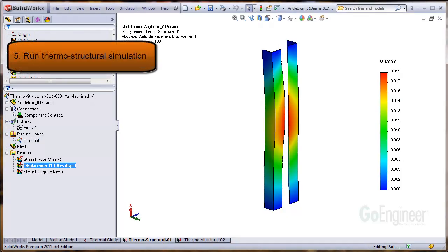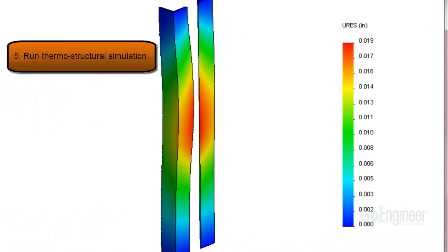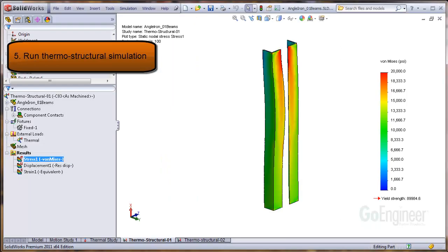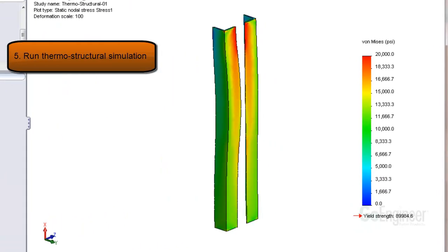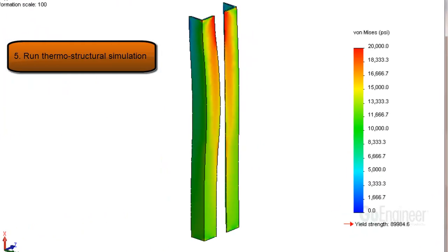Here are the results of the thermally induced deformations. You can see the columns bending and the resultant deflection is about 19 thousandths of an inch. This next image shows thermally induced stresses due to the end restraints on the columns.